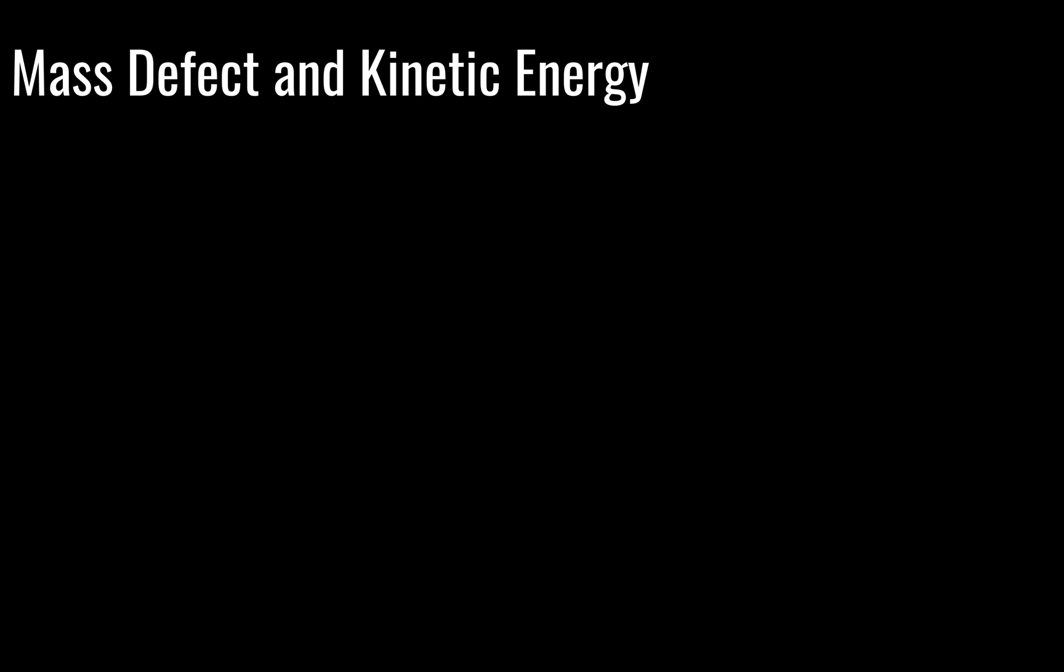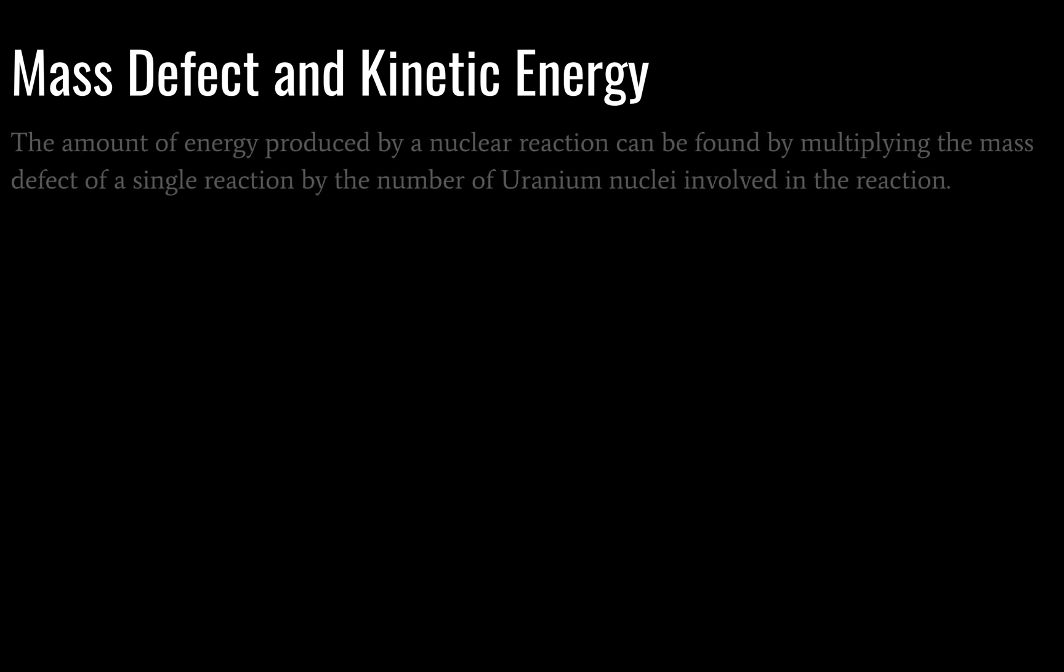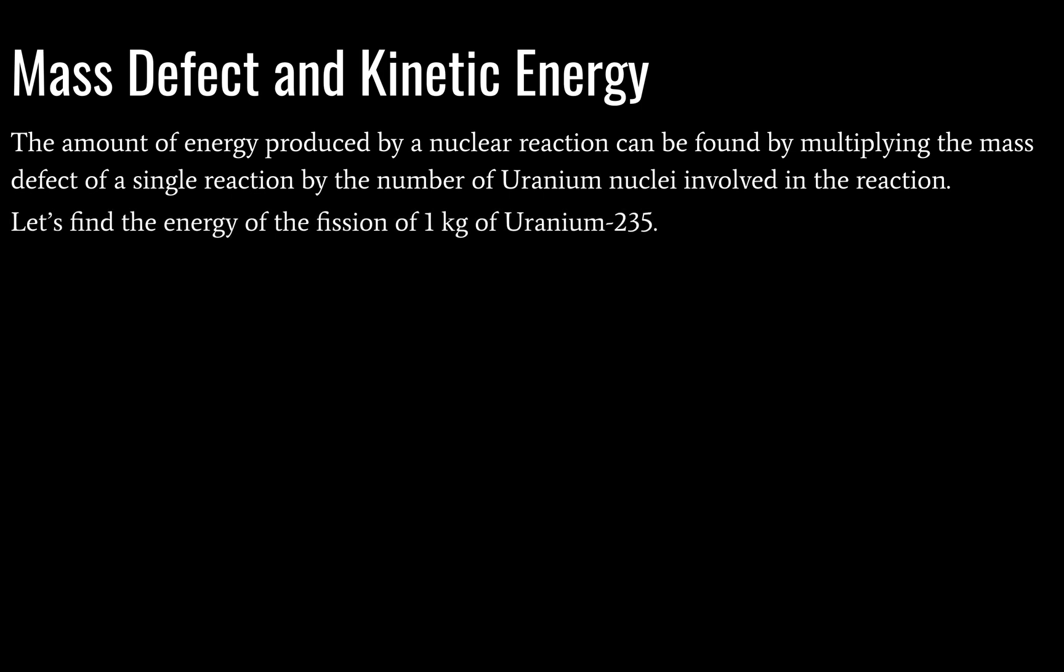Next we're going to look at mass defect and kinetic energy. So the amount of energy produced by a reaction can be found by multiplying the mass defect of a single reaction by the number of uranium nuclei involved in the reaction.